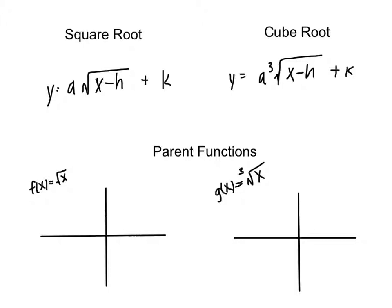We can identify that this is the square root because we have x minus h to the one half, which has the form of the square root of x minus h. And then this is the cube root because we can see the three here.